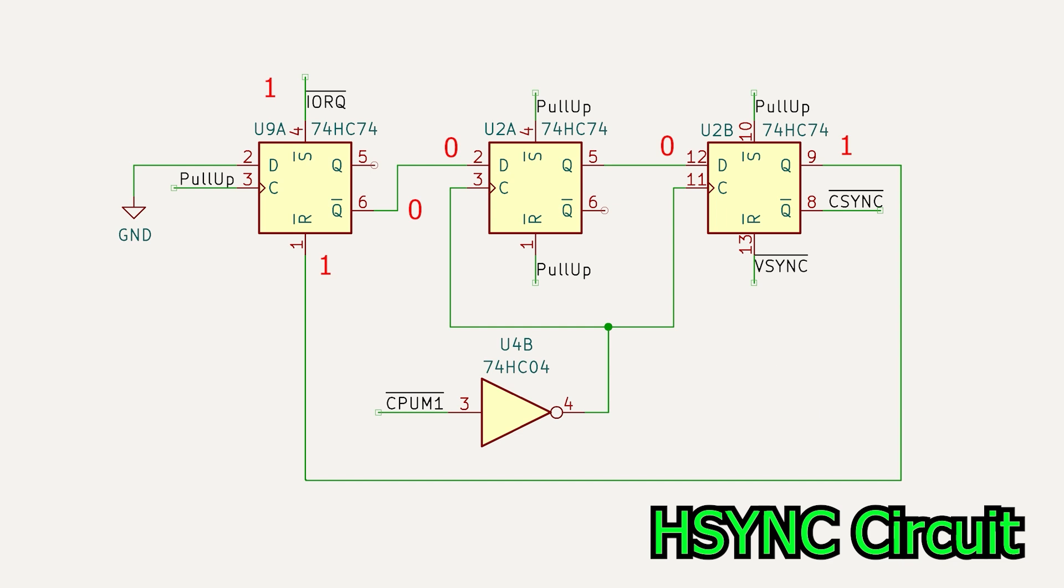The zero on the input gets transferred to the output of the middle flip-flop. Then, as we fetch the jump instruction at location 3a hexadecimal, we clock the rightmost flip-flop and its output goes zero, so this represents the start of our horizontal sync period.